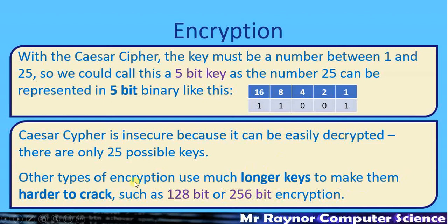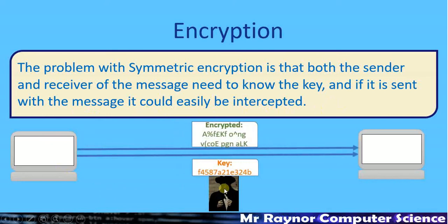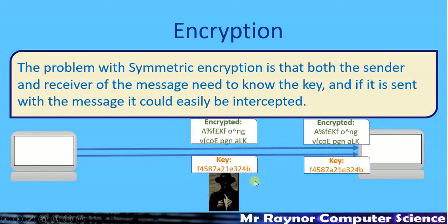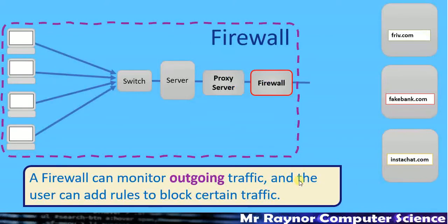The issue with symmetric encryption is that both parties use the same key, so you need to somehow get the key to the person at the other end. For internet transmission, data passes through many routers between your computer and the server. If somebody could tap into that conversation midway and obtain both the encrypted data and the key, they'd be able to decrypt the message — for example, intercepting a card number — and neither party would know the data had been captured along the route.